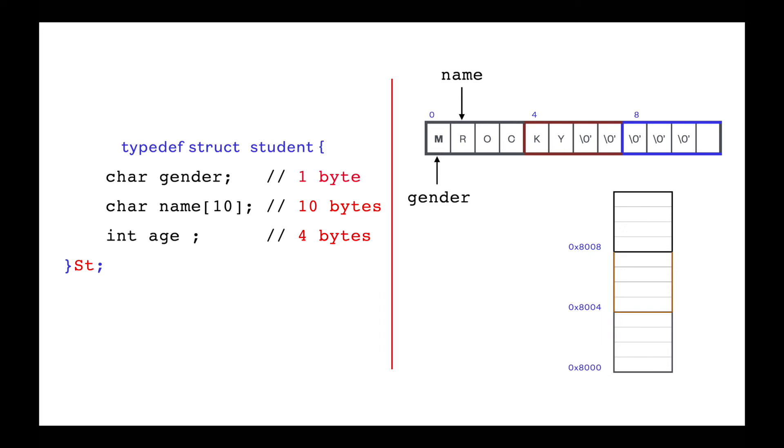This memory read always works with 4 byte alignment. I mean data fetched from memory addresses in multiple of 4, like 8000, 8004, 8008, 8012 and so on.